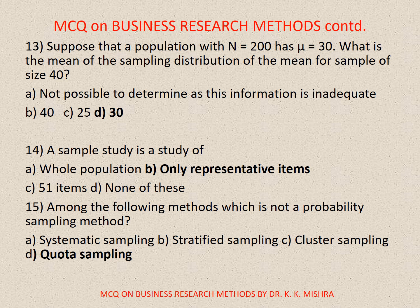Question number 14. Sample size — this study is a study of. Options are: A. Whole population, B. Only representative items, C. 51 items, D. None of these. Correct option is B. Only representative items. Question number 15. Among the following methods, which is not the probability sampling method? Options are: A. Systematic sampling, B. Stratified sampling, C. Cluster sampling, D. Quota sampling. Correct option is D. Quota sampling.